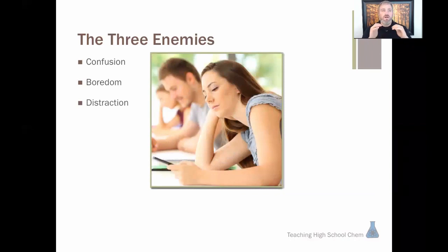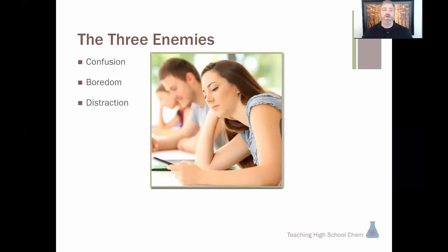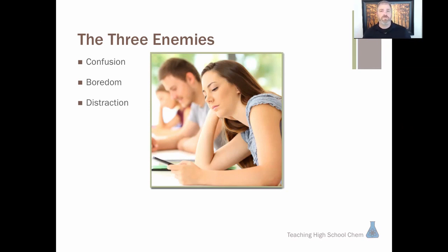The third enemy is distraction. When kids are distracted, they're not paying attention and not actively learning. Cell phones are part of it, but also things like having a big test next period, a pep rally later in the day, or just having had a fight with a friend. Some of these distractions we can get ahead of with strategies. All three of these — confusion, boredom, distraction — are going to show up. The question is: what do we do when we see them?